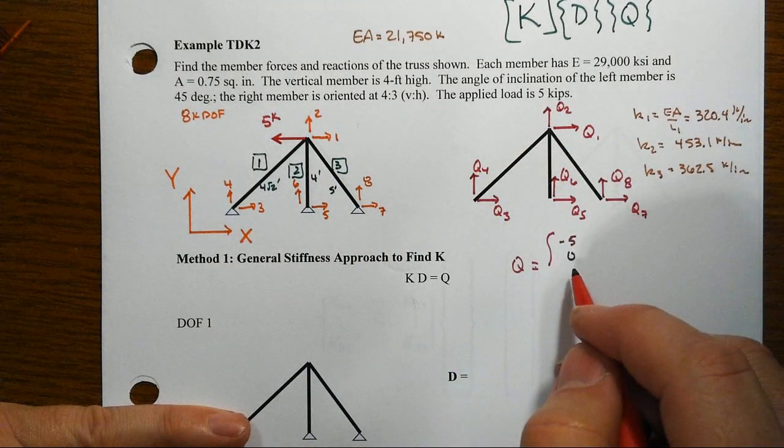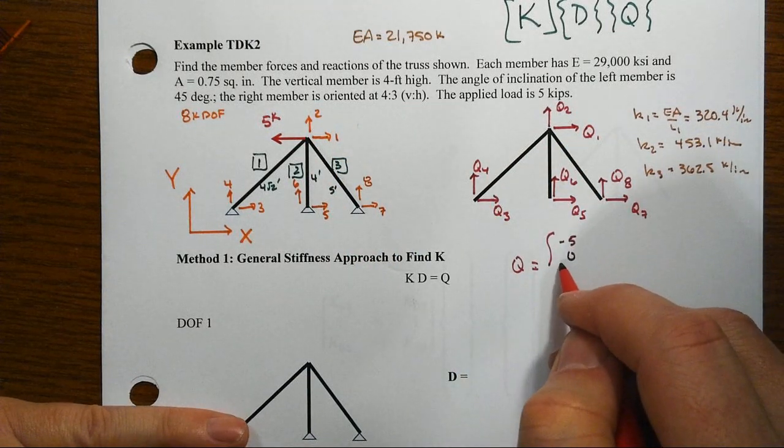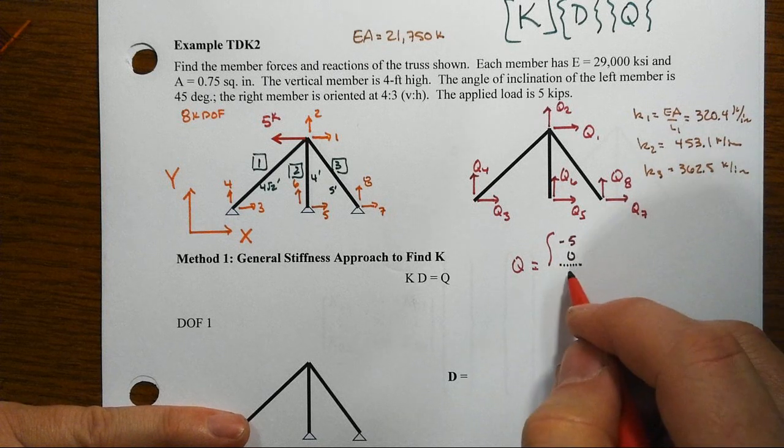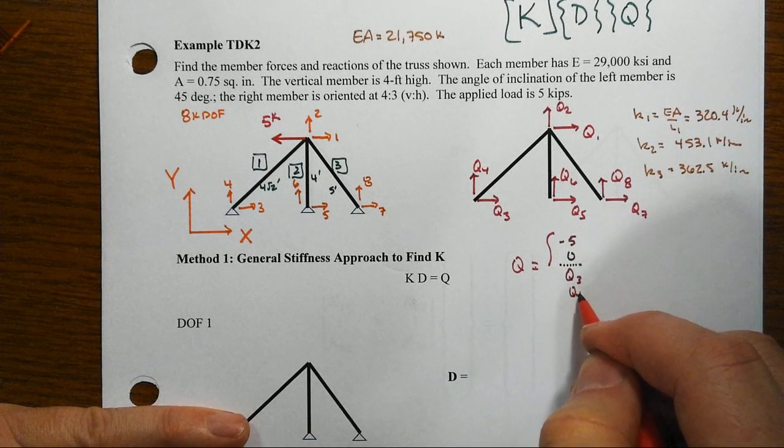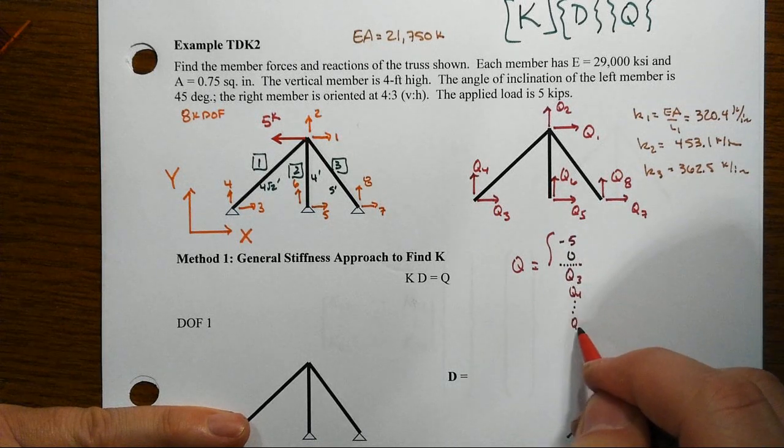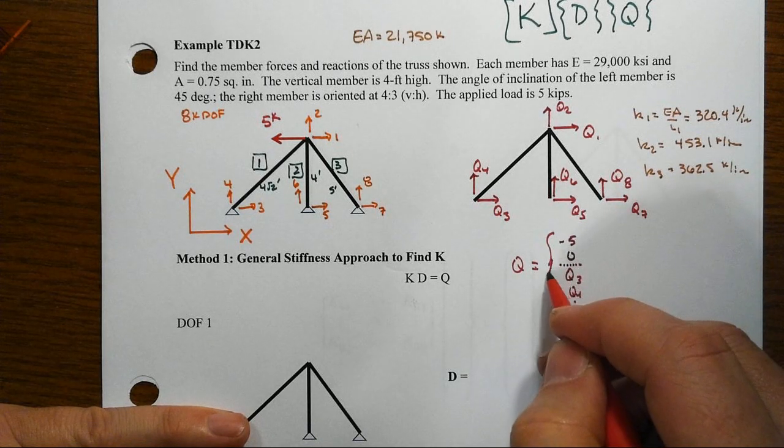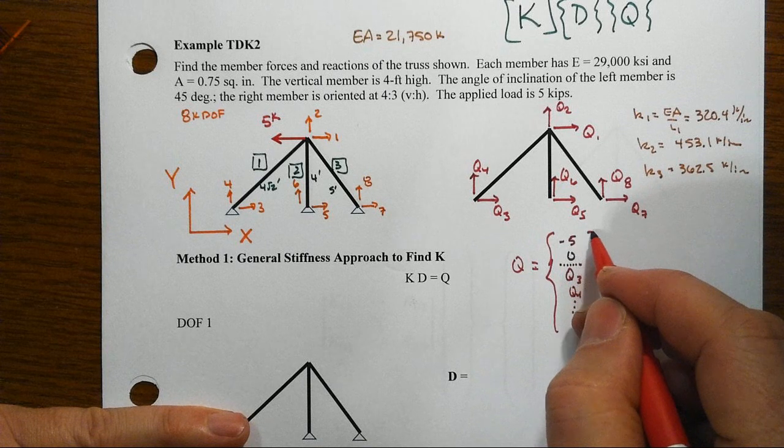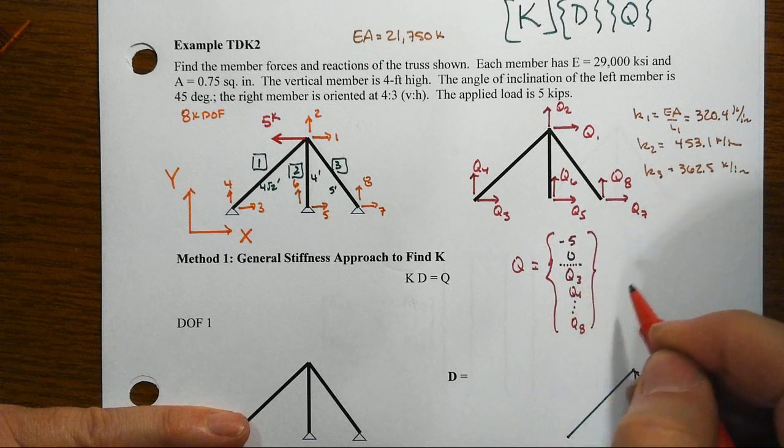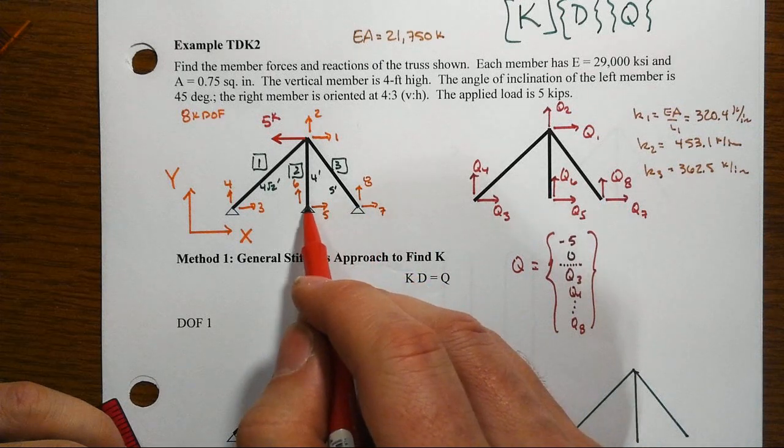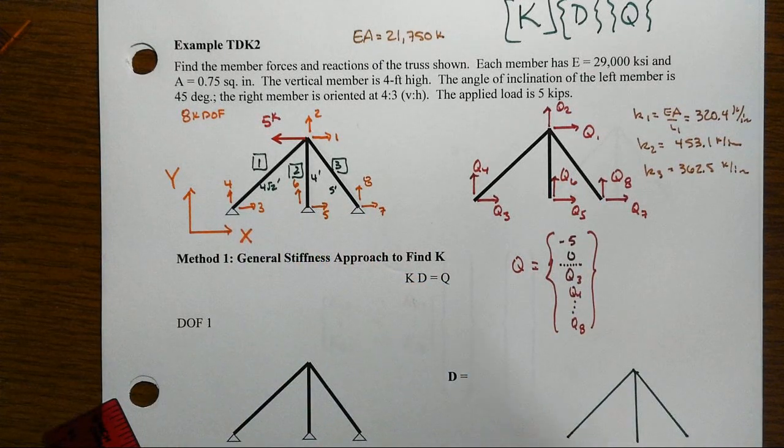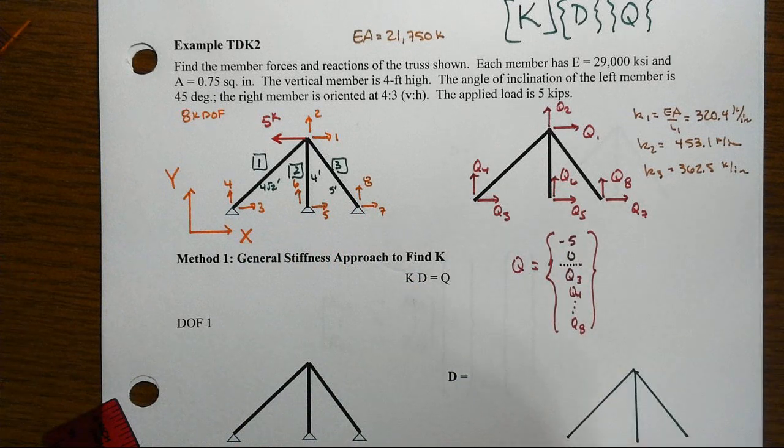Now the rest of these are all support forces. So since I segregated those out, I'm going to just put that little line there, q3, q4, so on and so forth, down to q8. I don't know what those are. Those are going to be a result of the response of the system. Really what they are, the forces necessary so that the displacements in all directions at those bottom joints or nodes is equal to 0.